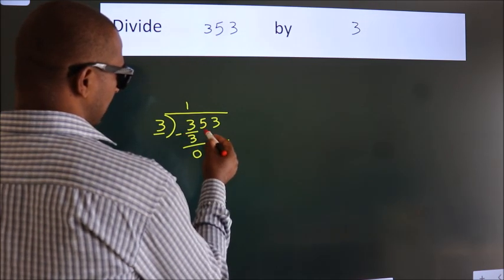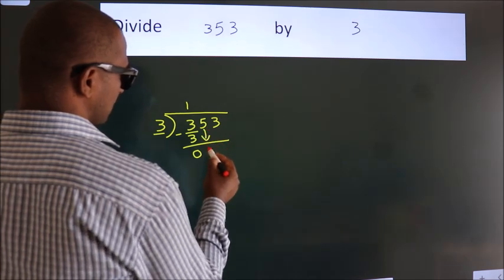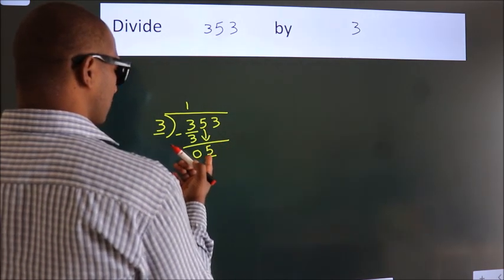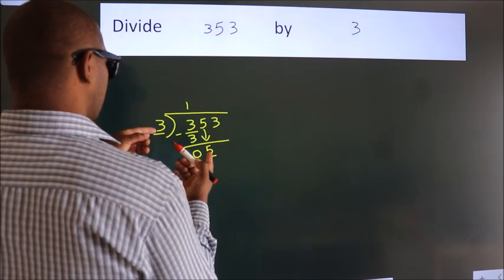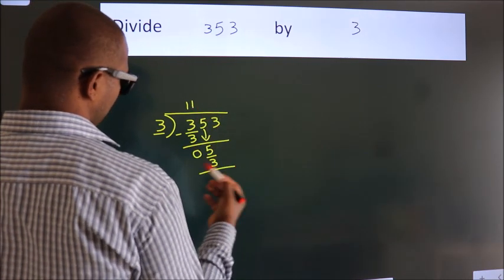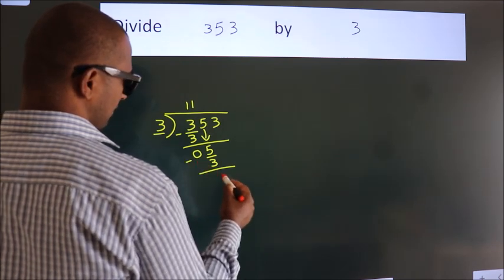After this, bring down the beside number. So 5 down, so 5. A number close to 5 in 3 table is 3 once, 3. Now, we subtract. We get 2.